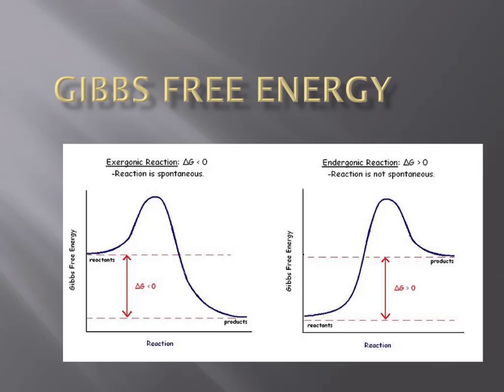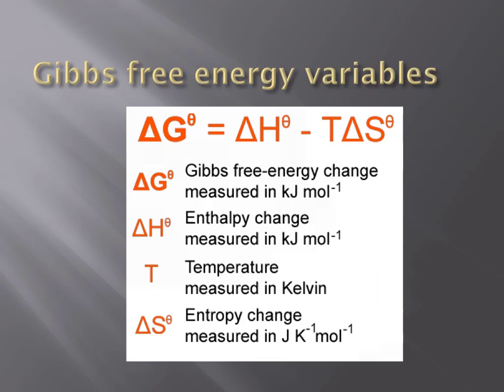By the end of this video, you should be able to determine if a chemical reaction is exergonic, if it will occur spontaneously, or endergonic, if it requires energy from an outside source to occur. Gibbs free energy is, in essence, a measure of whether a chemical reaction can occur by itself or if it needs some outside source of energy to occur.